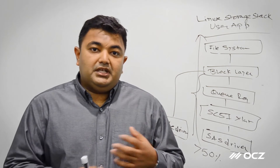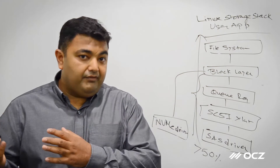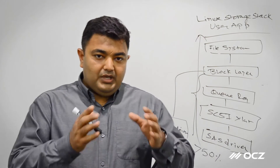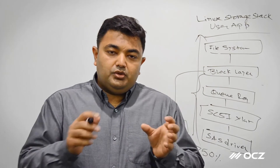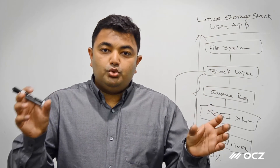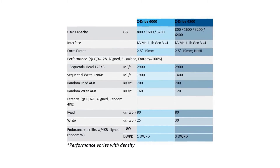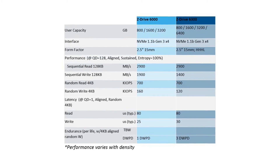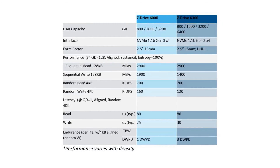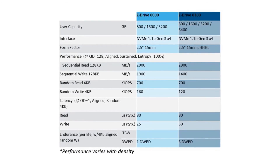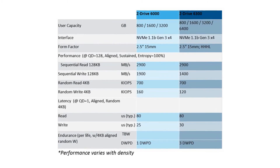The Z Drive 6000 takes full advantage of NVMe and PCIe Gen 3x4 speeds. You can categorize them in two types: the 6000 and the 6300. The 6000 is more intended toward read-intensive applications, so the endurance is one drive write per day, while the 6300 is for mixed workloads and gives three drive writes per day of endurance.